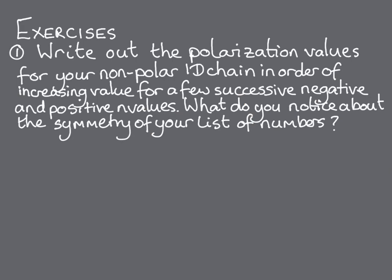This leads us to our first exercise for this module. Using the formula P equals q over 2, plus n times q for our non-polar 1D chain, or if you prefer, you can take the 3D case, P equals Pq over 2, plus n times Pq, make a list of a few polarization values for successive values of positive and negative n. We call this list the polarization lattice. You should notice something about the symmetry of the list.